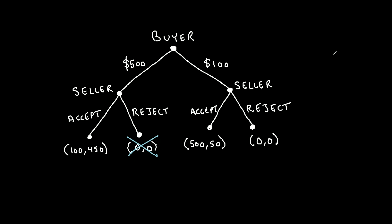Then we can move over to this other end node over here, and we'll say, okay, what if we reach this point in the game? Will the seller accept the offer, or will they reject the offer? Well, if they accept the offer, they get a payoff of $50. And if they reject the offer, they get a payoff of $0. So they would prefer the payoff of $50.